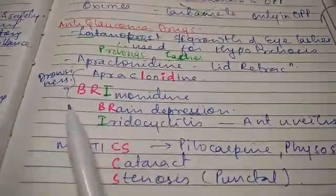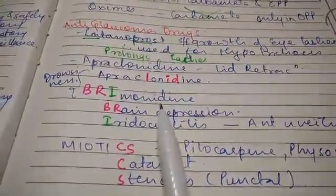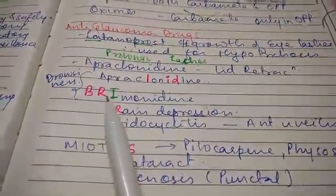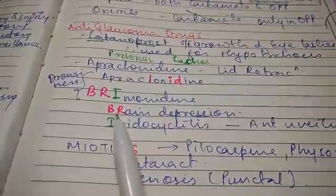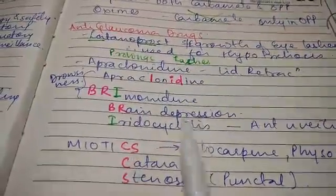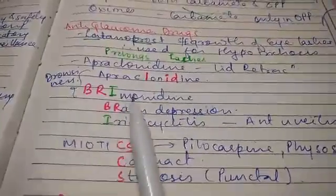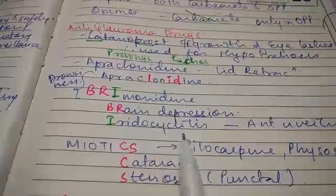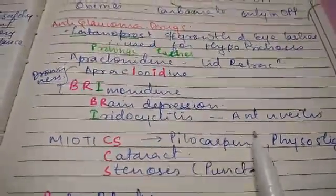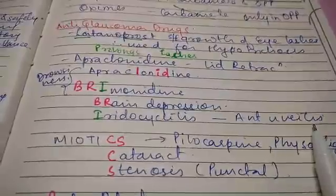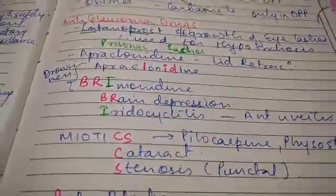Another drug is brimonidine. Take the letters B and R — these cause brain depression, that is drowsiness. The letter I will remind you of iridocyclitis, which is also known as anterior uveitis.